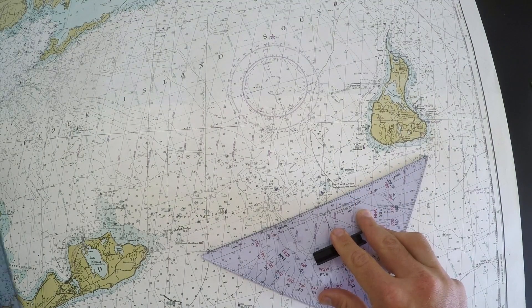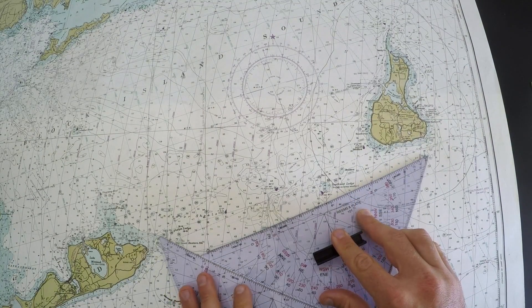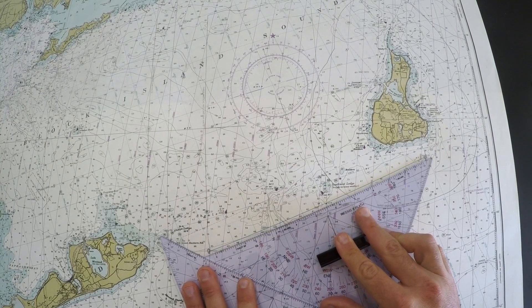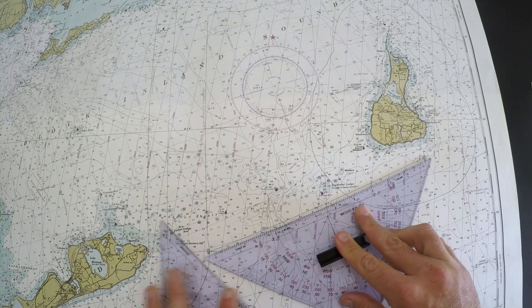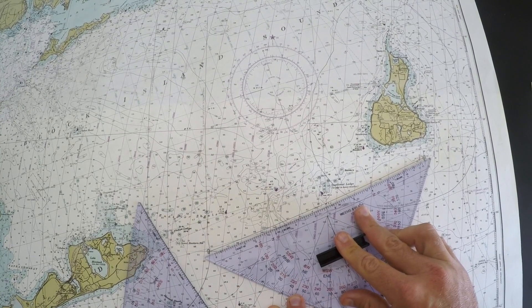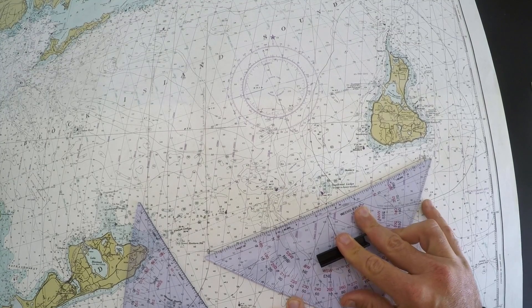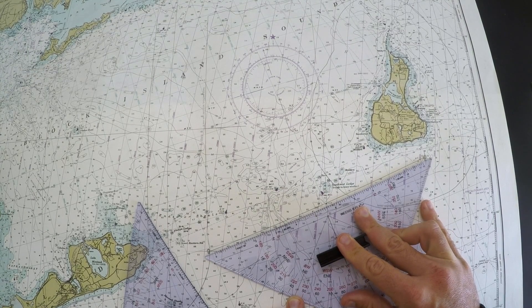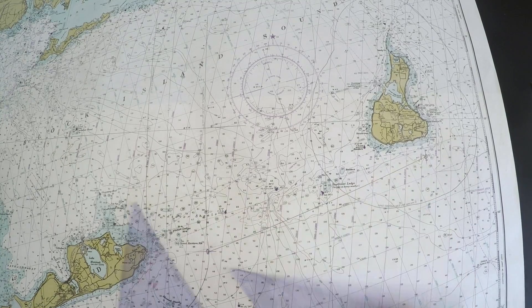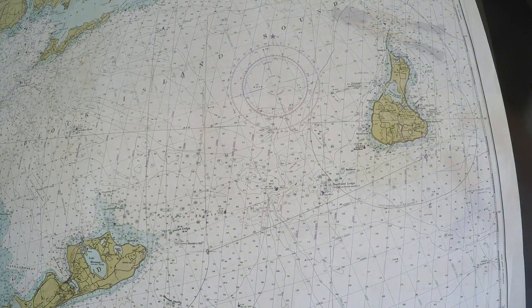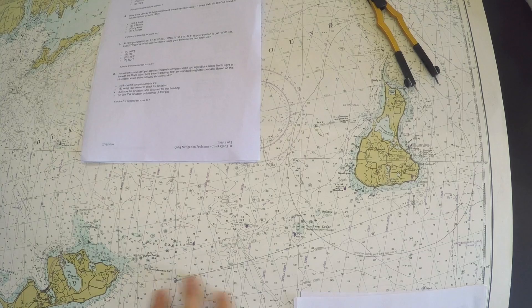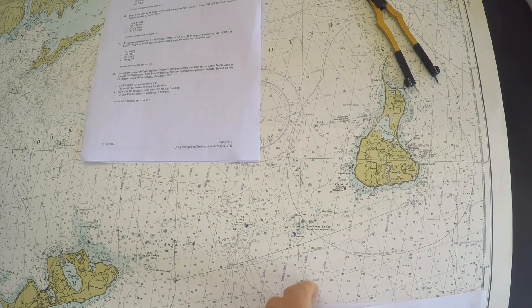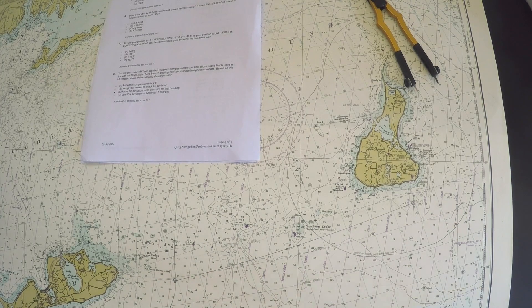If I measure the course between them in degrees true, I come up with about a value of 070.5 degrees. So now that I've got my course, what I can do is the compass correction or uncorrection problem and try to solve for the answer.